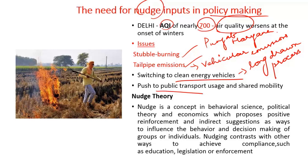Shared mobility is the key to cut down tailpipe emissions in India. So what is nudge theory? Nudging is a concept of behavioral science, political theory, and economics. It proposes positive reinforcement and indirect suggestions to influence the behavior or decision-making of groups or individuals. One classic example of nudge theory put into practice is the midday meal scheme.